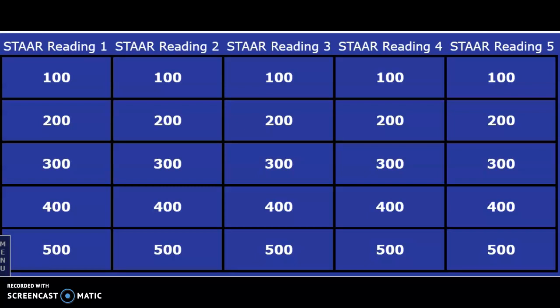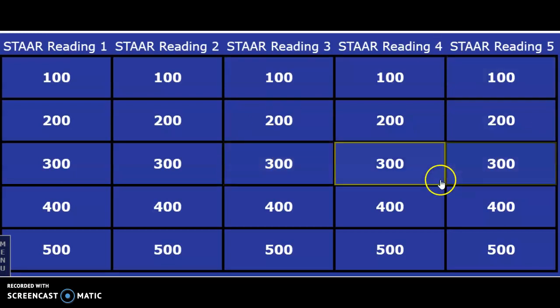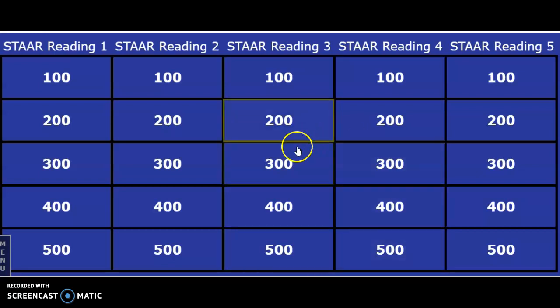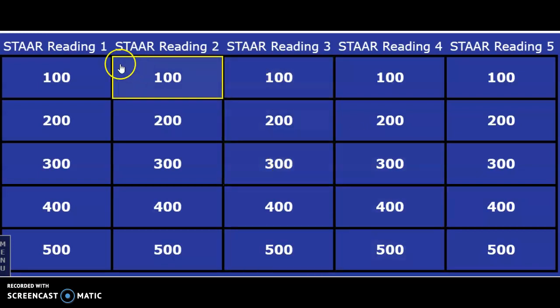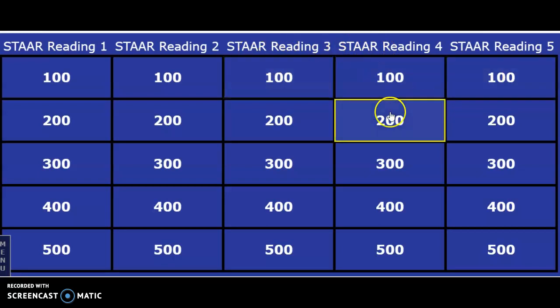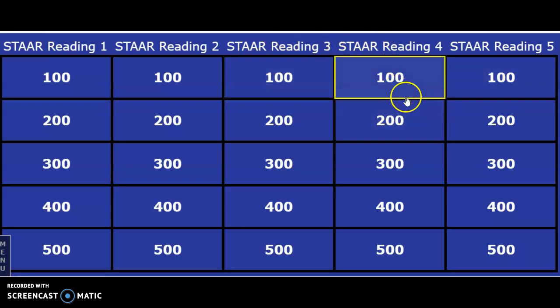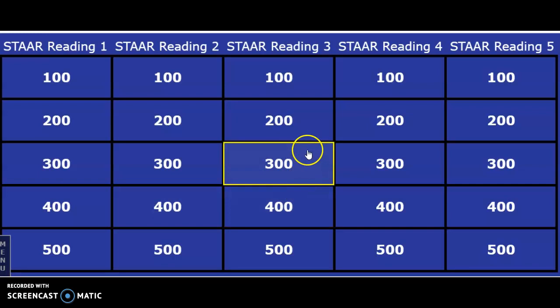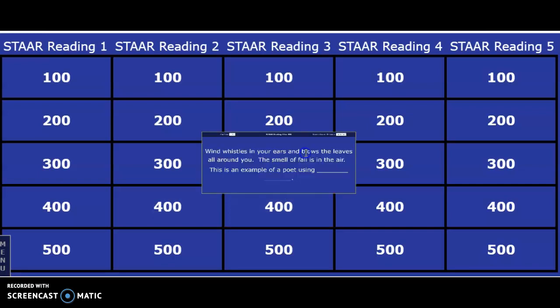All right boys and girls, we are going to play a game today. We will be doing some fourth grade review — it'll cover everything that we have learned this year so far. I will just click on random boxes, you can add up your points, and in the comments I want you to tell me how many points you got. Let's start here — each category just says 'Star Reading' either one, two, three, four, or five, so it doesn't really matter which category we click.